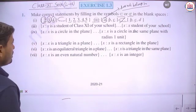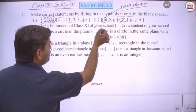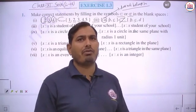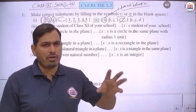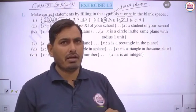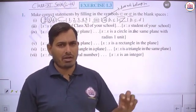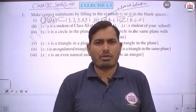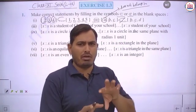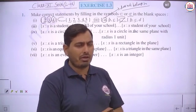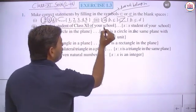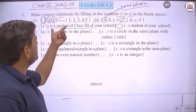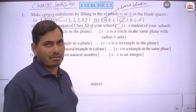Third part: X is a student of Class 11 of your school, and the second set is all students of your school. Clearly, all Class 11 students are a part of all students of the school, so we use the subset symbol. Class 11 students form a subset of all students in the school.